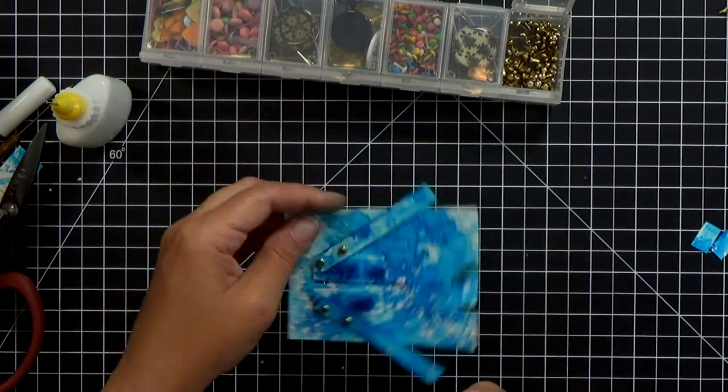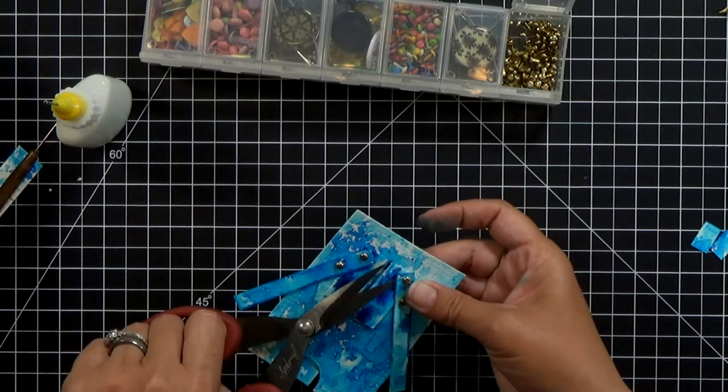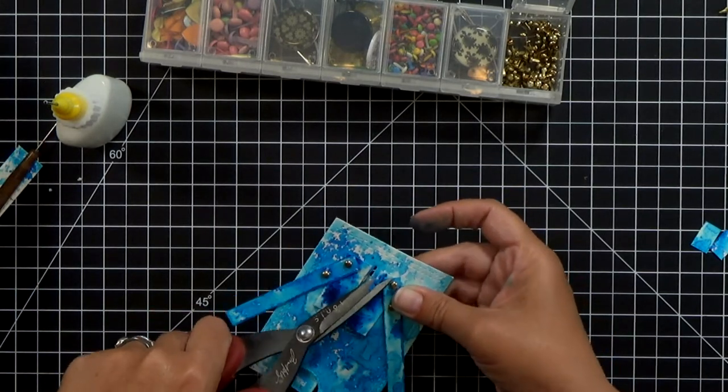So we can trim that extra bit off and I'm kind of making it more of a W shape now.